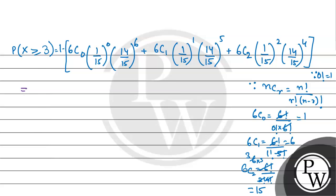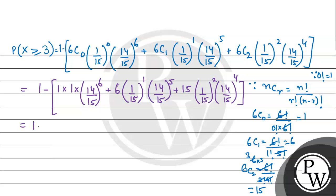I can write this as equal to 1 minus 1 times anything to the power 0 is again 1, and 14 by 15 to the power 6. 6C1 is 6, 1 by 15 to the power 1 and 14 by 15 to the power 5, plus 6C2 which is 15, times 1 by 15 to the power 2. Then 14 by 15 is common throughout, so I can factor out 1 by 15.